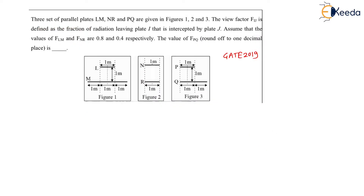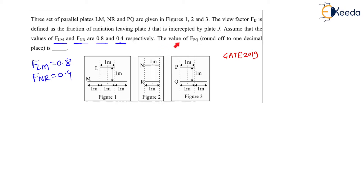Three sets of parallel plates — LM, NR, and PQ — are given in figures 1, 2, and 3. In figure 1, plate L and plate M are given. In figure 2, plates N and R are given. In figure 3, plates P and Q are given. The view factor F_IJ is defined as the fraction of radiation leaving plate I that is intercepted by plate J. The value of F_LM is given as 0.8 and F_NR is given as 0.4. The value of F_PQ, rounded off to one decimal place, is to be found.